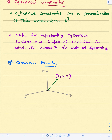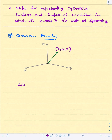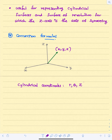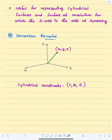Let's consider a point in R3. This point has coordinates x, y, z with respect to the Cartesian coordinate system. Now the same point can be expressed using cylindrical coordinates. In the Cartesian coordinate system we have x, y, and z, but in the cylindrical coordinate system we have r, theta, and z.